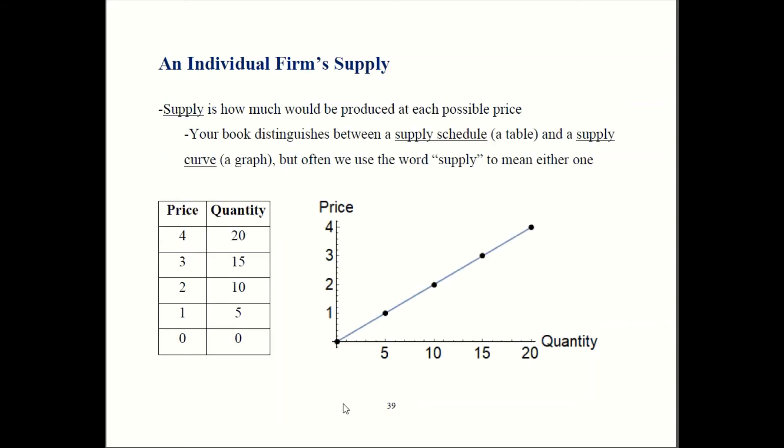Supply tells you how much the firm would produce at each price. Again, your book's terminology is a bit idiosyncratic. They call the table the supply schedule, and this over here is a supply curve. Most books and texts will refer to supply to mean either one. Both these things are showing you the same information.